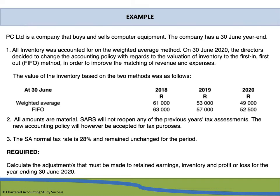Let's look at an example. PC Limited is a company that buys and sells computer equipment. The company has a 30 June year-end, and all inventory was accounted for on the weighted average method. On 30 June 2020, the directors decided to change the accounting policy for the valuation of inventory to the first-in first-out (FIFO) method, in order to improve the matching of revenue and expenses.